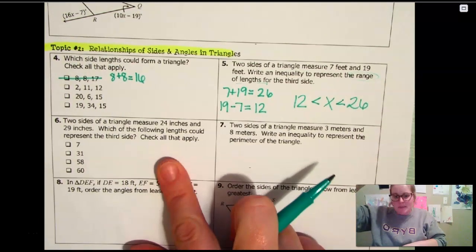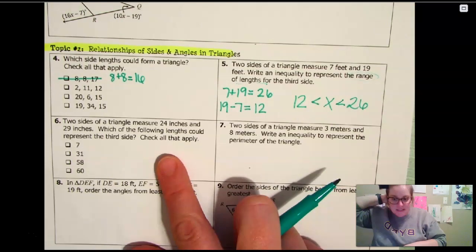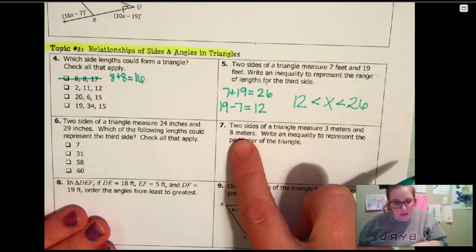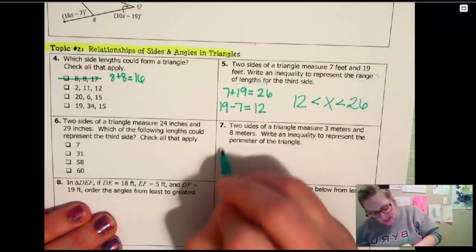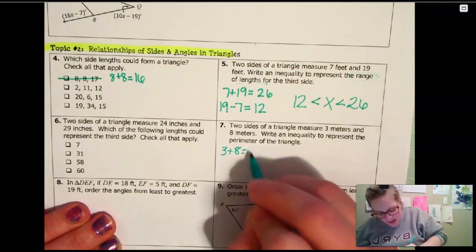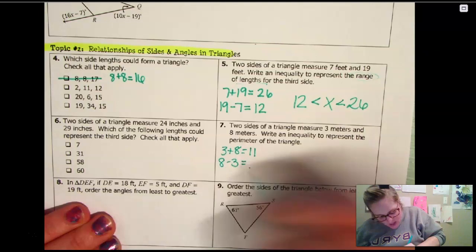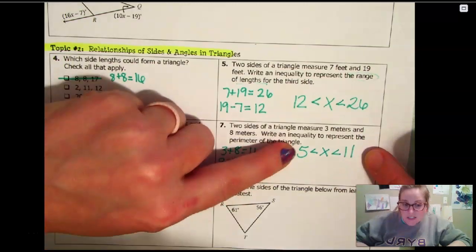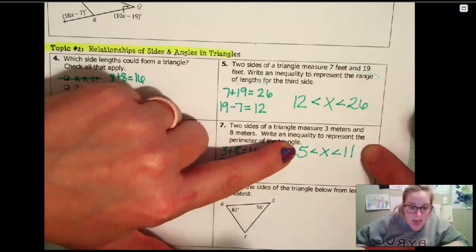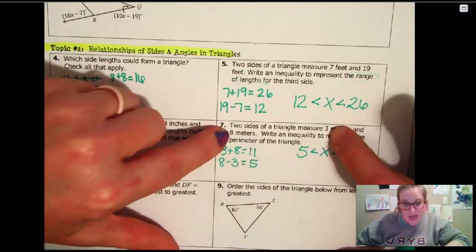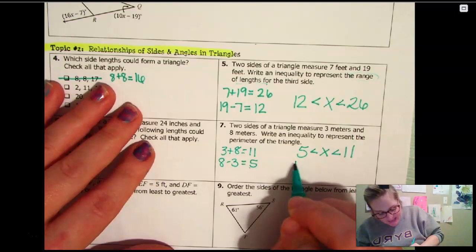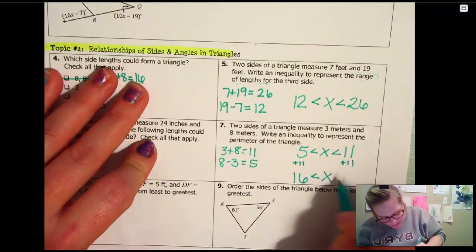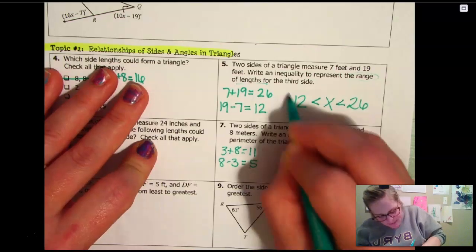You're going to be using that same idea over here for number six. On number seven, it says that you are given three meters for one side, eight meters for the other side. They want to deal with the perimeter. So you're going to have to repeat what I just did. Three plus eight equals eleven, right? And eight minus three equals five. So five is going to be your lowest value and the highest value would be eleven. Now, this is for your third side. Your perimeter is going to add all of your sides together. So we already know we've got three and eight. Three plus eight is eleven. So I'm just going to add that eleven and then this would represent your perimeter. So sixteen is going to be the minimum perimeter. The maximum perimeter is going to be twenty-two and that is your answer.